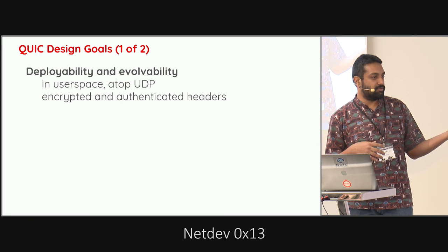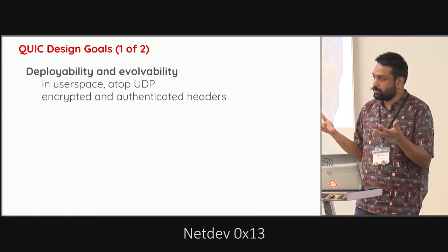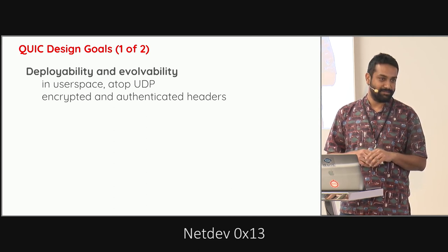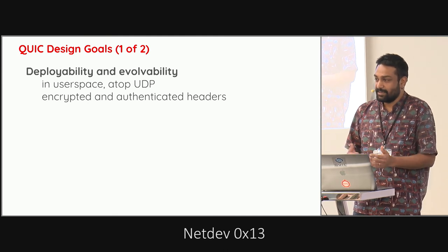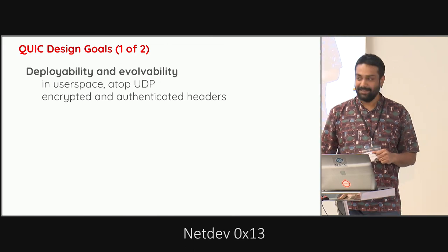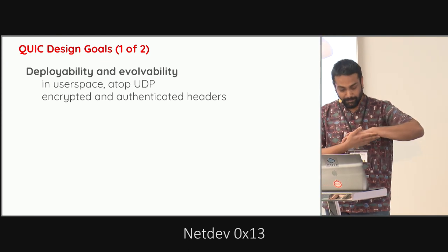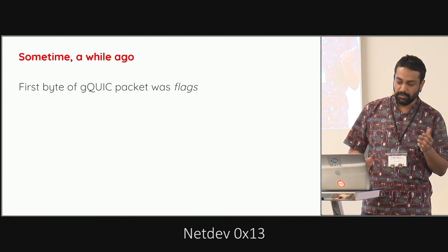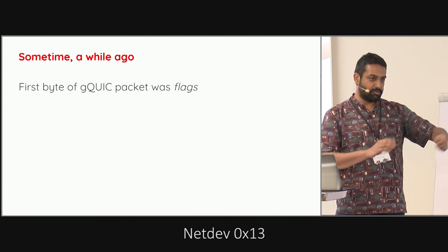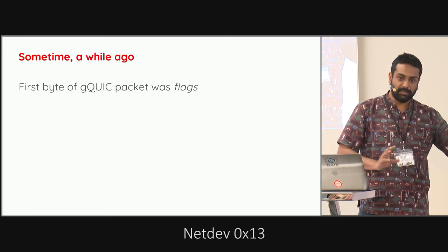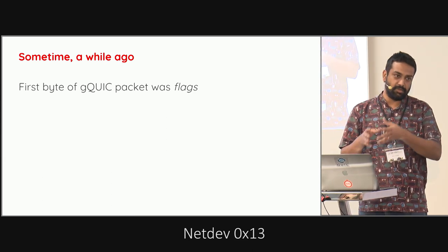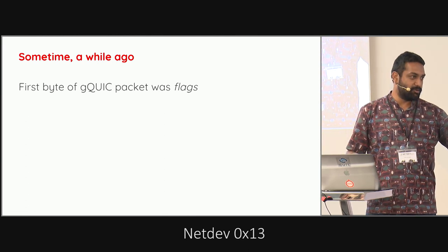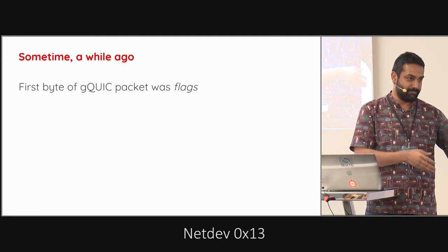Why are evolvability and encryption/authentication of headers in the same conversation? Because middleboxes can't read them. I'll explain with a story. What we now call GQuic is basically Google's original version of QUIC — the IETF is standardizing QUIC, which is actually quite different from the original version. We call the original GQuic and the new one simply QUIC, because we didn't want to call the new standard IQuic.